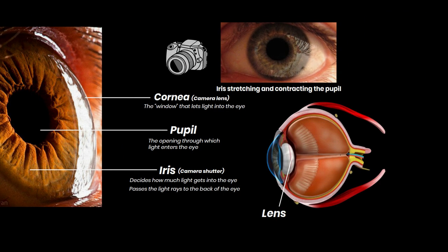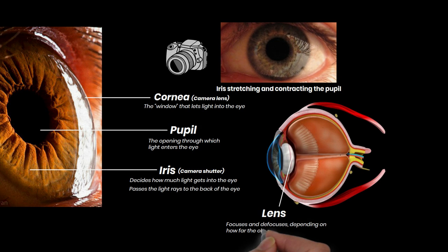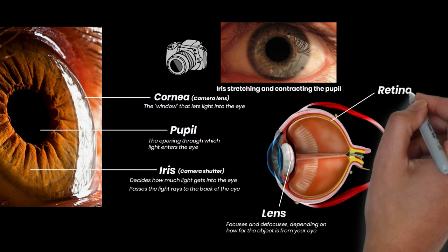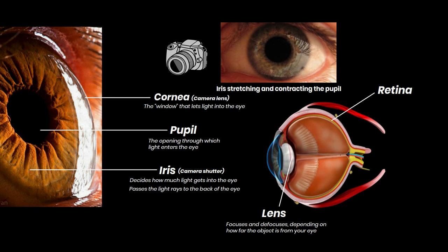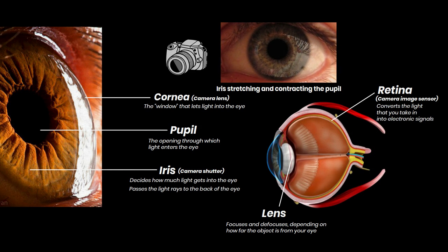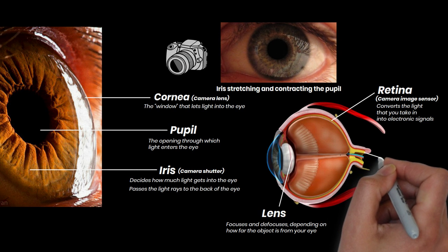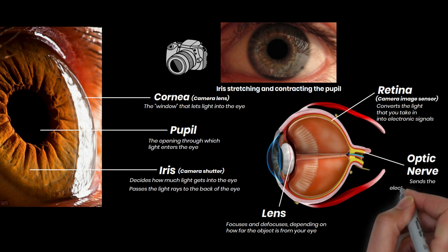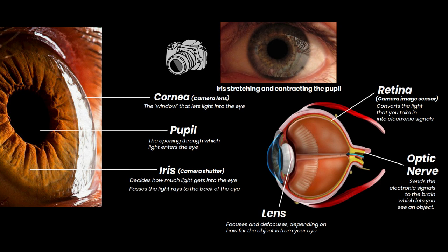In the eye, the lens, which is just behind the pupil, focuses and defocuses depending on how far the object is from your eye. Light passes through the lens and reaches the retina, which acts as an image sensor of a digital camera. It converts the light that you take in into electronic signals. Then the optic nerve transmits the electronic signals to the brain, which lets you finally see an object.